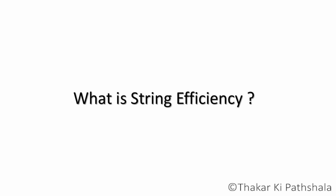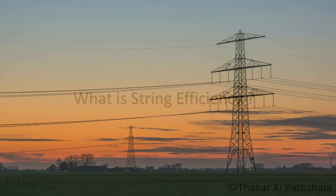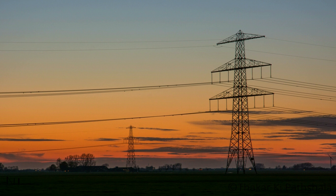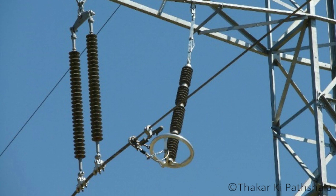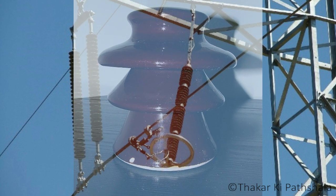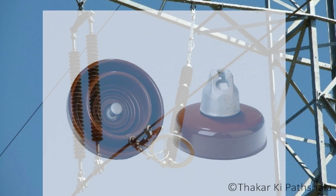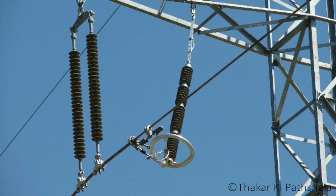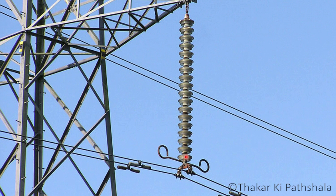So first of all, what is string efficiency? When you look at a high voltage overhead transmission line, particularly at its insulator, you will see there is no pin or shackle type insulator, but instead there is a string of disc type insulators. When the line is under operating condition, the disc nearest to the line conductor experiences the highest stress, and as we go upward, the other discs experience less stress. This uneven voltage distribution is called string efficiency.